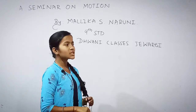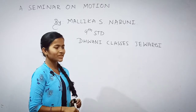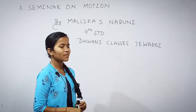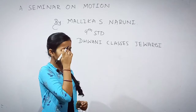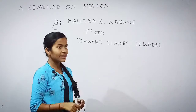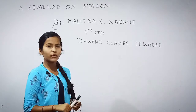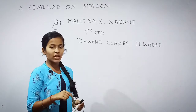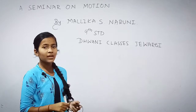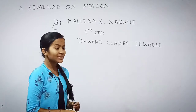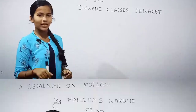Velocity is the speed of a body in a given direction. The formula of velocity is equal to displacement divided by time taken.